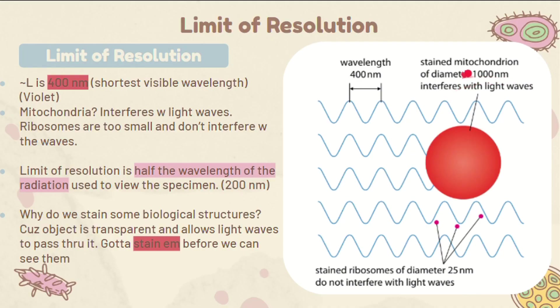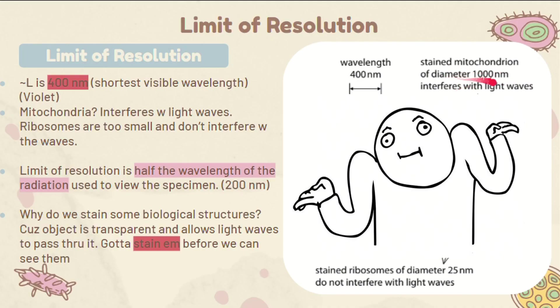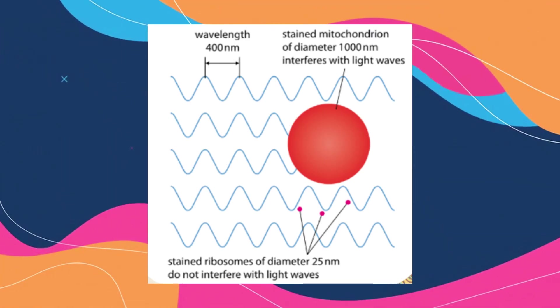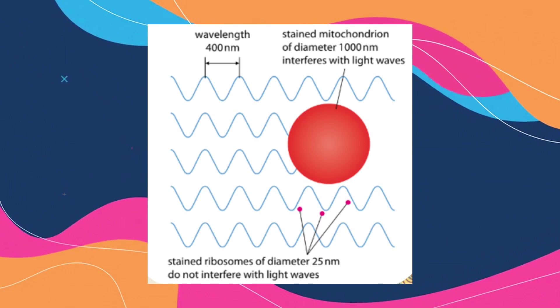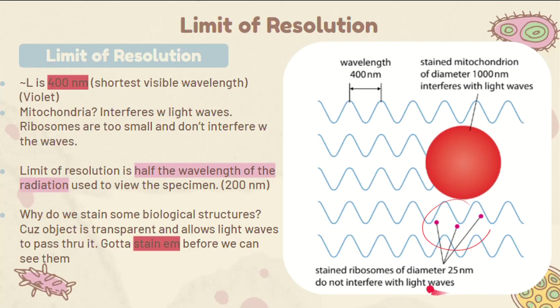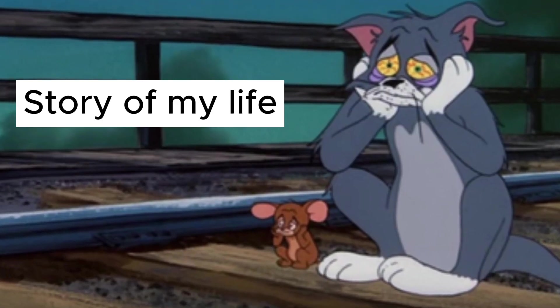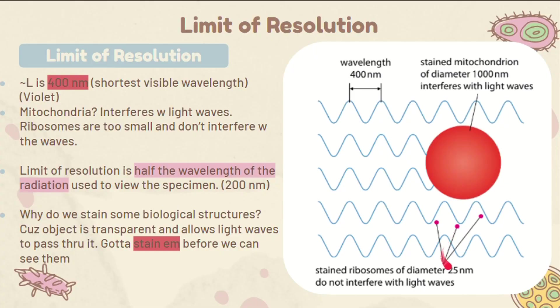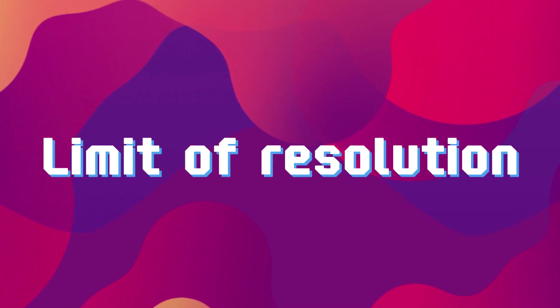It's a mitochondria. It's 1000 nanometers and obviously interferes with our light waves. The smaller ribosomes are having a much harder time being noticed though — story of my life. This brings us to something we call the limit of resolution.